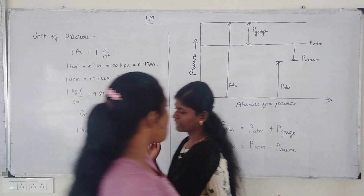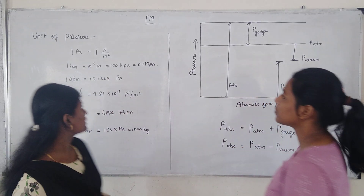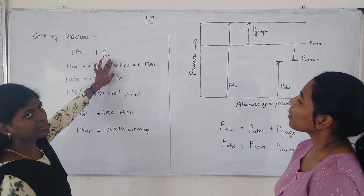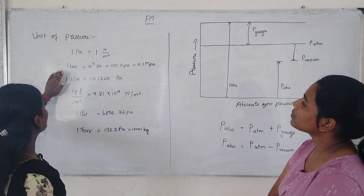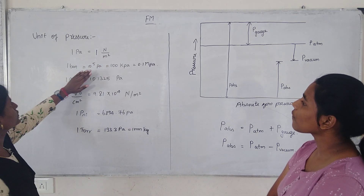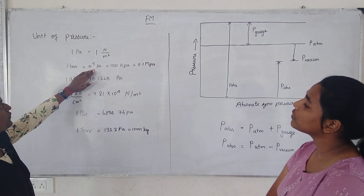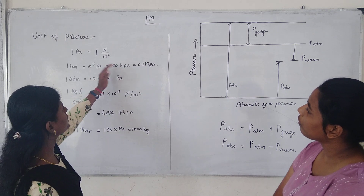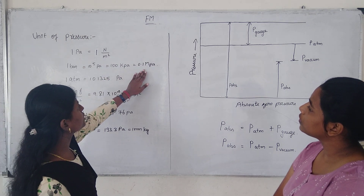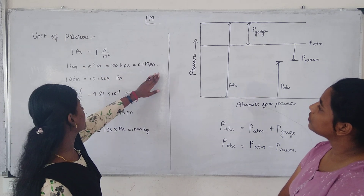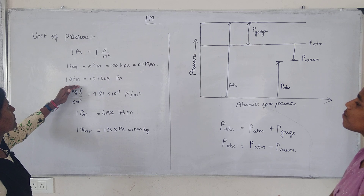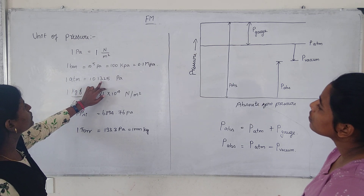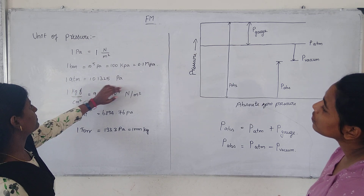Units of pressure: 1 Pascal equals 1 Newton per meter square. 1 bar equals 10 to the power of 5 Pascal, that is equal to 100 kilopascal, that is equal to 0.1 megapascal. 1 atmospheric pressure equals 101,325 Pascal.